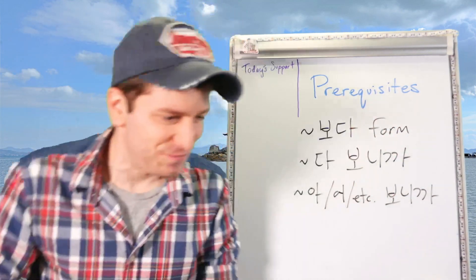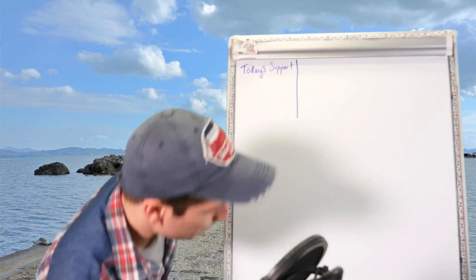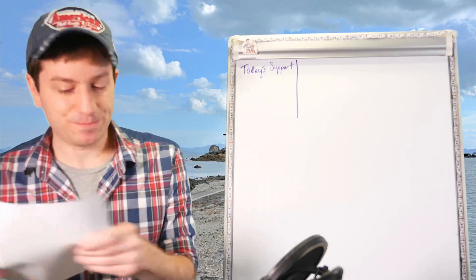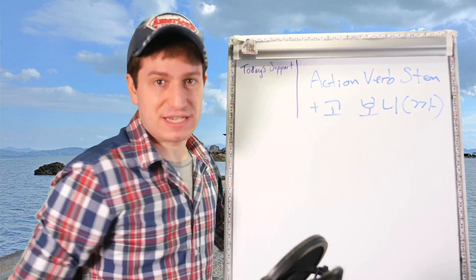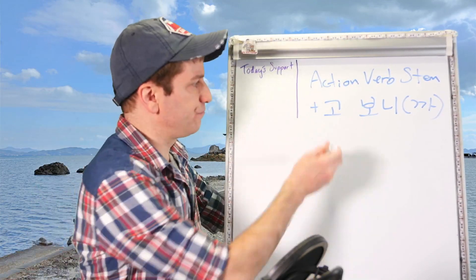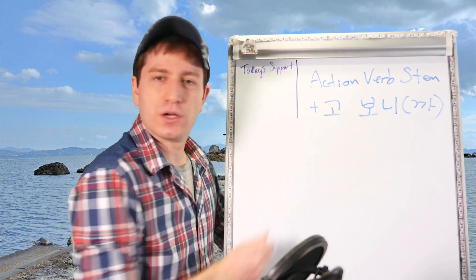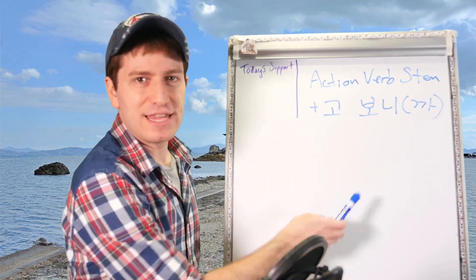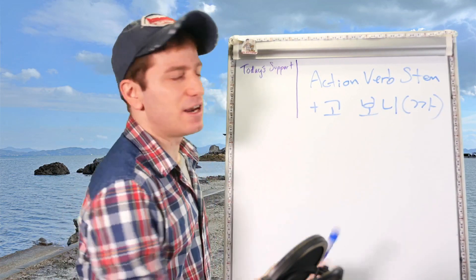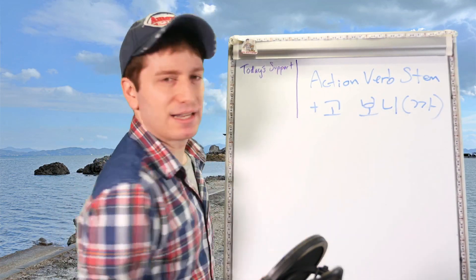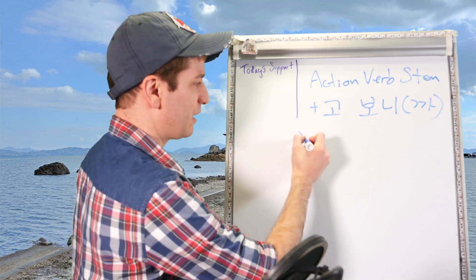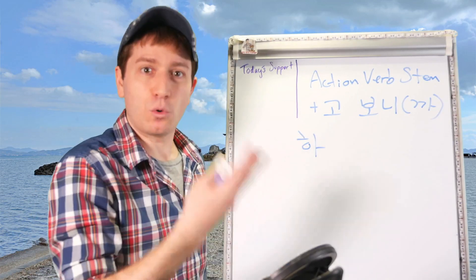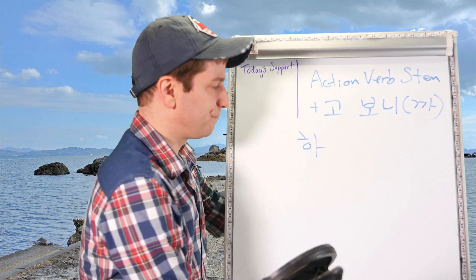Hello, everyone. The topic we're going to be learning about today: you take an action verb stem — only an action verb — and you attach 고. And then you attach 보니 and optionally 까. So if you have the verb 하다, you get 하고 보니까. That's it.